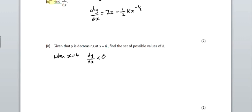We're going to use the gradient, which we've worked out just here. So we've got 2 times 4 minus a half times k times 4 to the minus a half. And that's the gradient there and that's got to be less than zero. So that turns into 8 and then that's a half there. So it's minus a half times k times a half is less than zero. So 8 minus a quarter k is less than zero. It's a quarter because that's what a half times a half is.